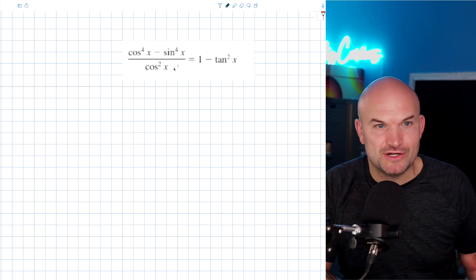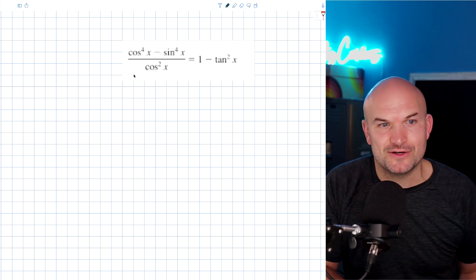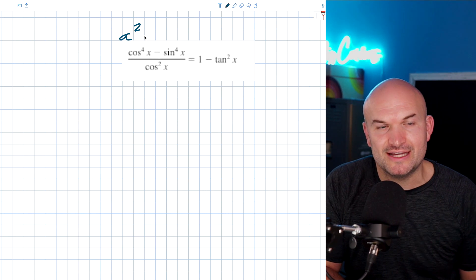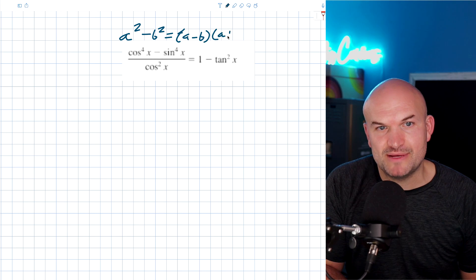Now, the other thing that you should also know is the difference of two squares. OK, so the main thing here I want you to understand is a squared minus b squared is equal to a minus b times a plus b.